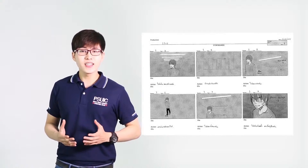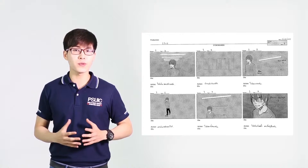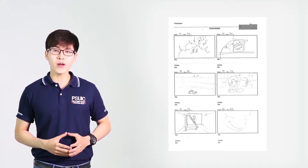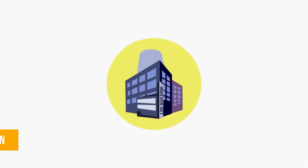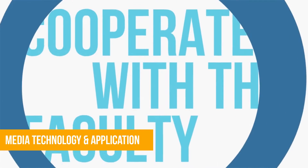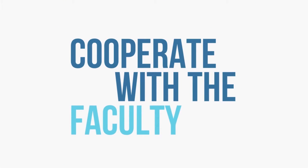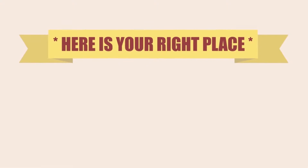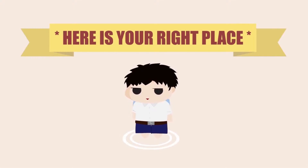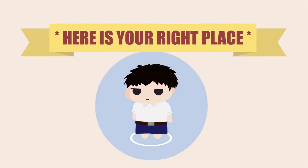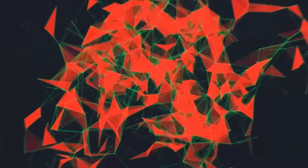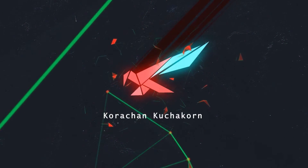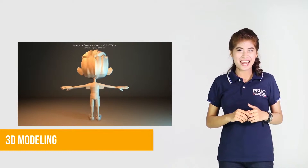Script writing and storyboarding class is offered to help students learn to write scripts, sequence plot, consider camera angles, and draw storyboards. When all the necessary skills are obtained, students can incorporate them to make new productions in the form of animation with audio to match. In the subject of media technology and application, these production methods are of great use for the future.